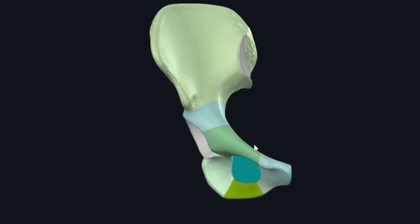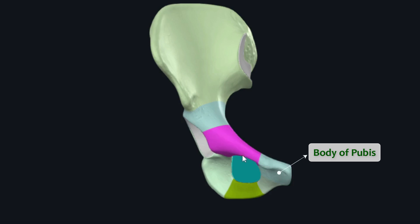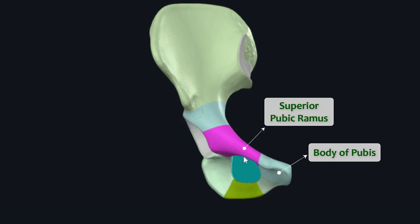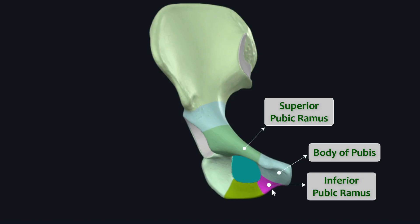The pubis has three parts. This medially located quadrilateral-shaped part is the body of pubis. This superiorly located bony bar projecting from the superior lateral aspect of the body of pubis is the superior pubic ramus, and the inferior pubic ramus extends from the inferior lateral aspect of the body of pubis.